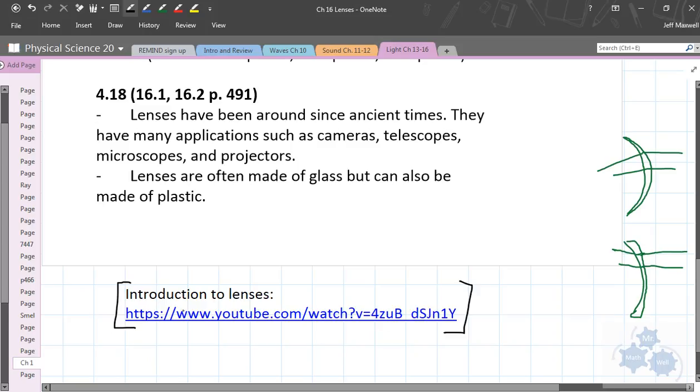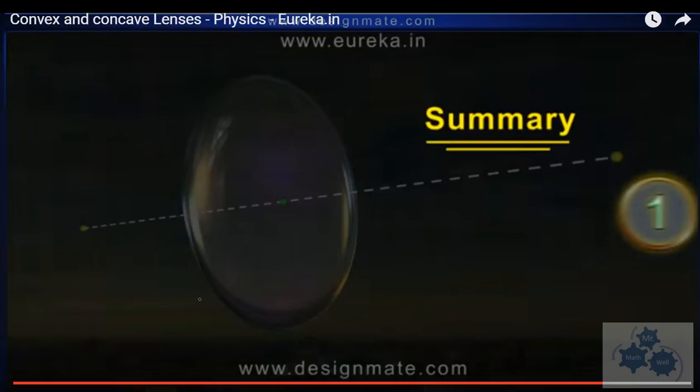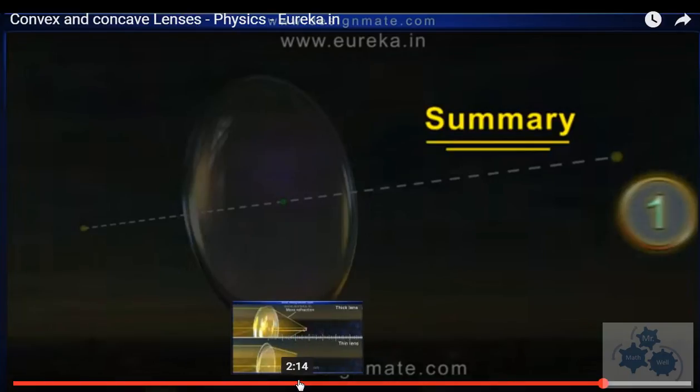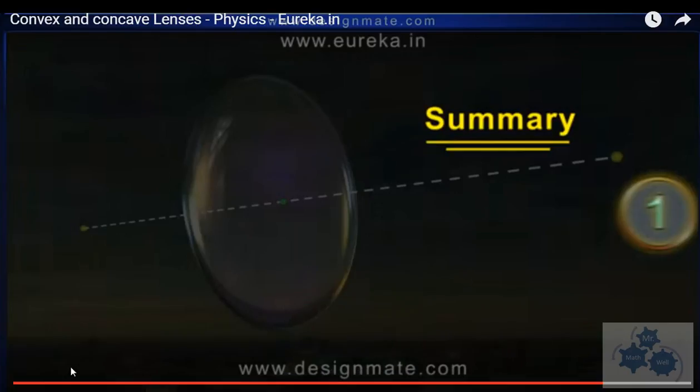The video is an introduction to converging and diverging lenses. It's very good. I'm going to skip to the summary part of the video. So, credits to www.designmate.com for a wonderful video. It's only 5 minutes long. I would seriously recommend you looking up this video, convex and concave lenses, physics, eureka.in. Here's another website that will have some of this information. Here is the summary. It's just a minute and a half long, so I'm going to watch this. This will be a good introduction to what we're learning about in lenses.